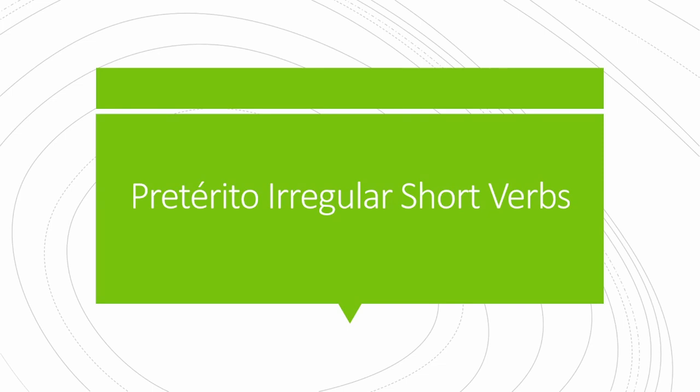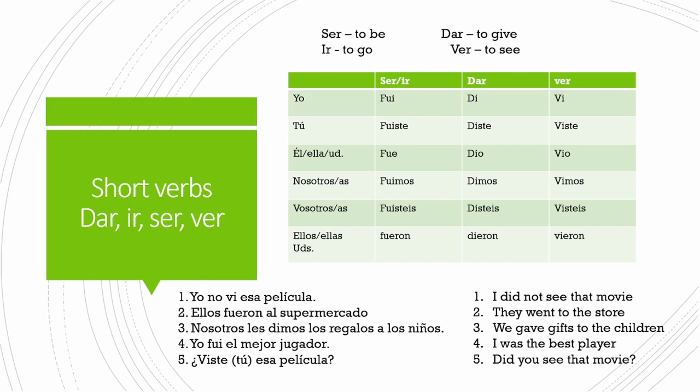Hi guys, in this short video we're going to go over short form verbs. These verbs are called short because they're short, and it includes only four verbs: ser, ir, dar, and ver. Take a moment to go over this conjugation chart — maybe hit pause — and then I'll go over the examples with you.